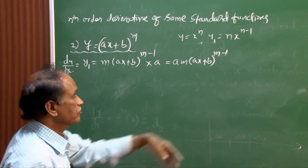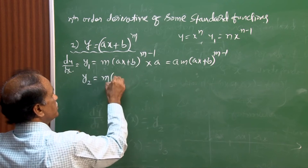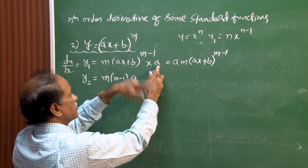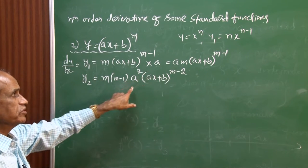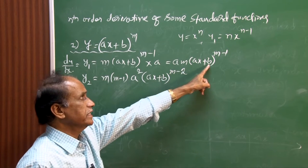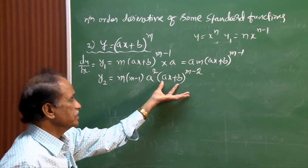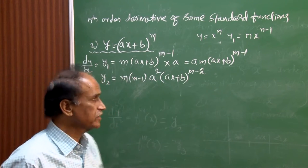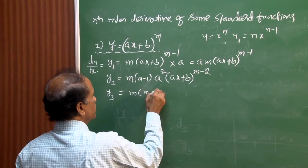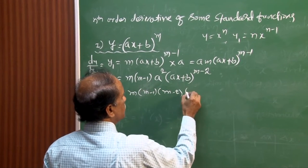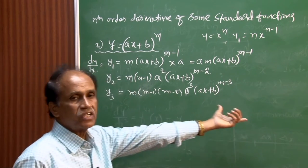The second-order derivative is y₂ = a² · m(m−1) · (ax + b)^(m−2): each differentiation brings out one more factor a, making it a². The third-order derivative is y₃ = a³ · m(m−1)(m−2) · (ax + b)^(m−3). Each step follows the same composite-function pattern.